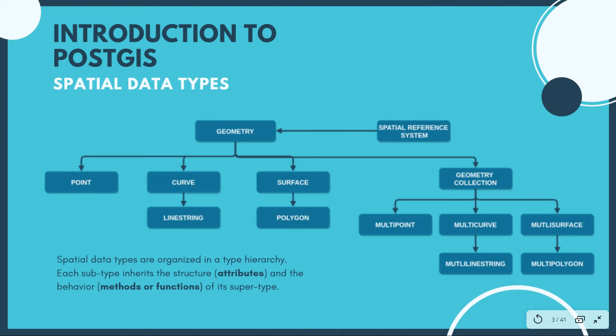We also have the geometry collection, which is broken down into multi-point, multi-curve, and multi-surface. In a geometry collection we can have a collection of both multi-point and multi-curve features. These spatial data types are organized in a hierarchy whereby the subtype is able to inherit the attributes and the behaviors of the supertype.